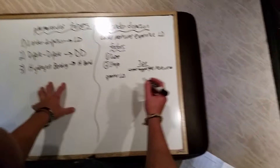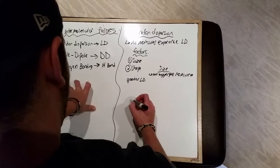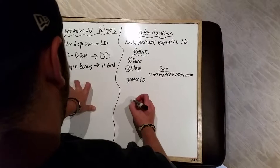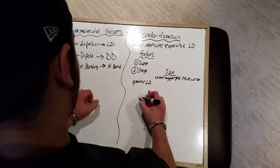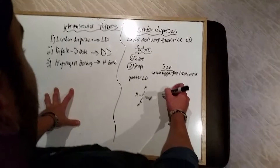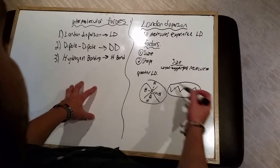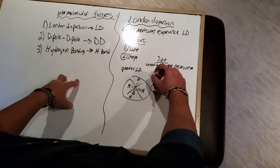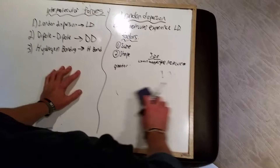The other thing that affects London dispersion is shape. If you have a tetrahedral shape, which is relatively compact, versus a molecule shaped more like a long chain, the elongated shape has a much greater surface area. This means it's going to stick to other molecules of its kind much more efficiently, giving it a higher London dispersion because it matches up with similar molecules much better.